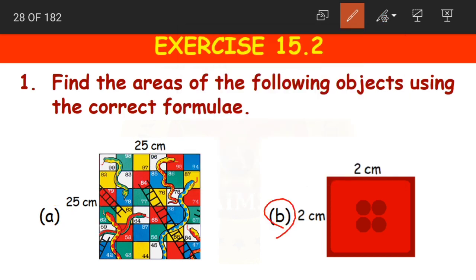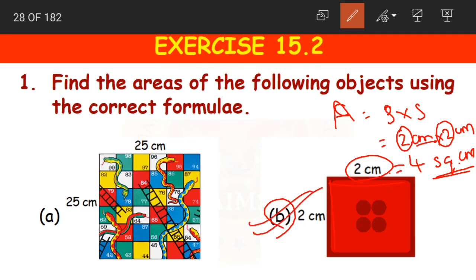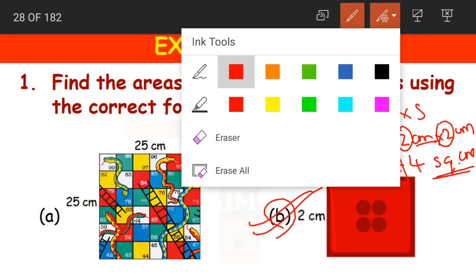Coming to question B. This is also a square with side equal to 2 centimeters. Area equals S into S, that is 2 centimeters into 2 centimeters equals 4 square centimeters.